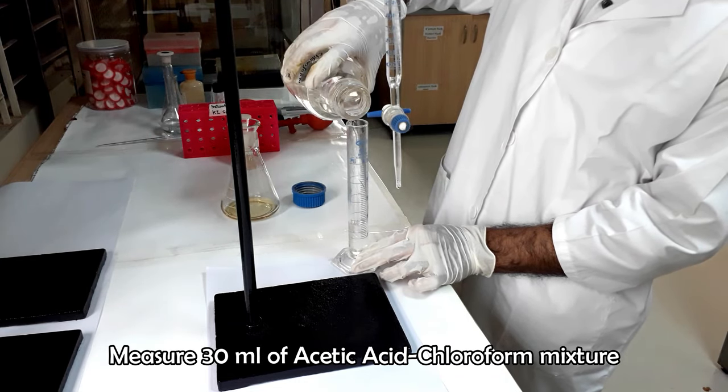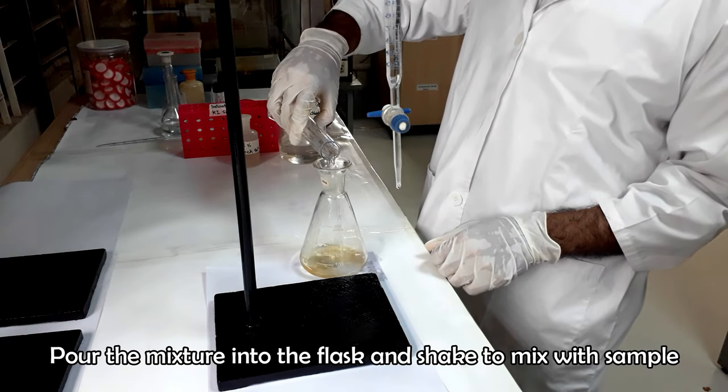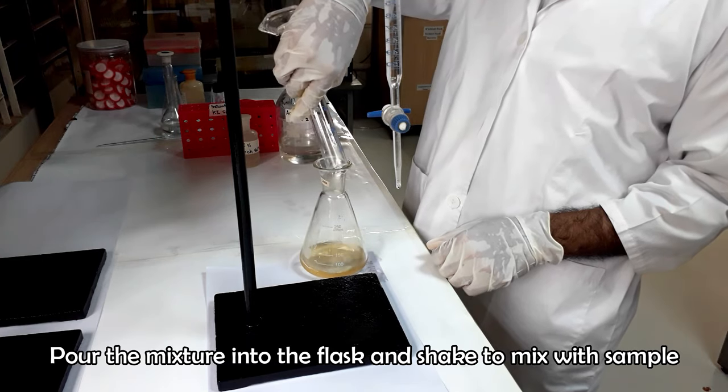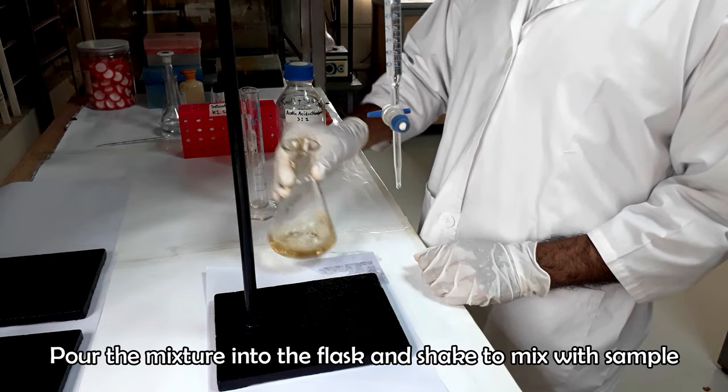Measure 30 ml acetic acid chloroform mixture and pour into the Erlenmeyer flask containing the oil sample. Shake and rotate the flask to mix the sample with the chemical mixture.